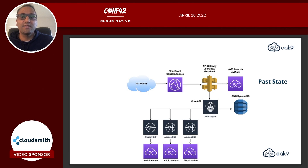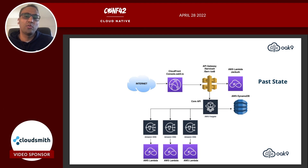Here's the past state of our architecture. It's a typical event-driven architecture in AWS. What we wanted to do was replace the monolith AWS Fargate cluster that we had running with Kubernetes, and use Argo CD to deploy microservices.